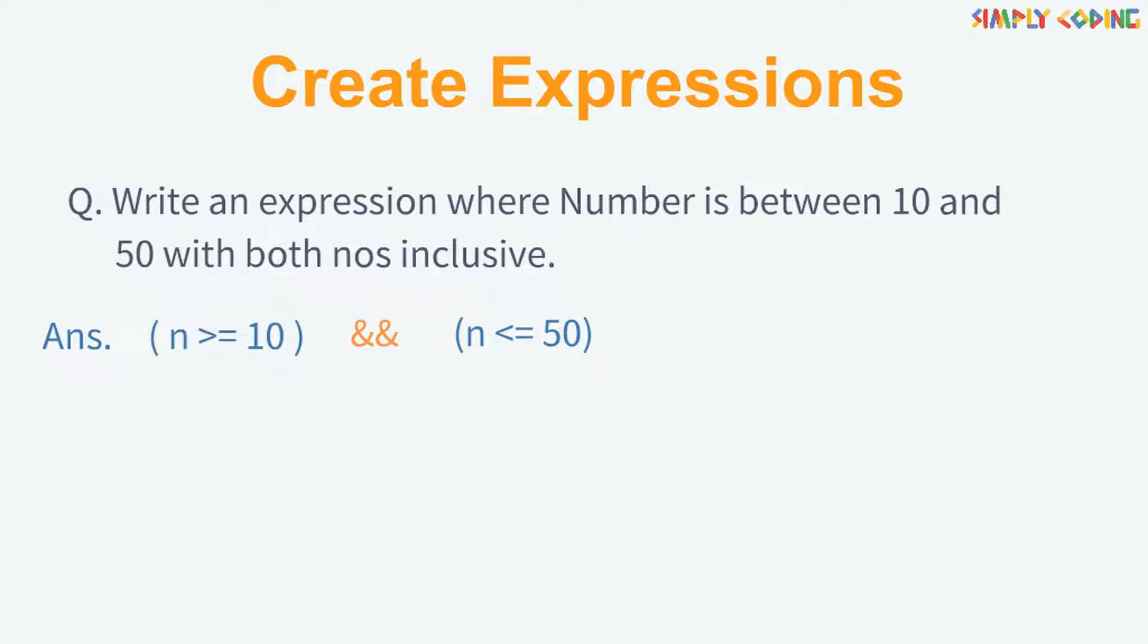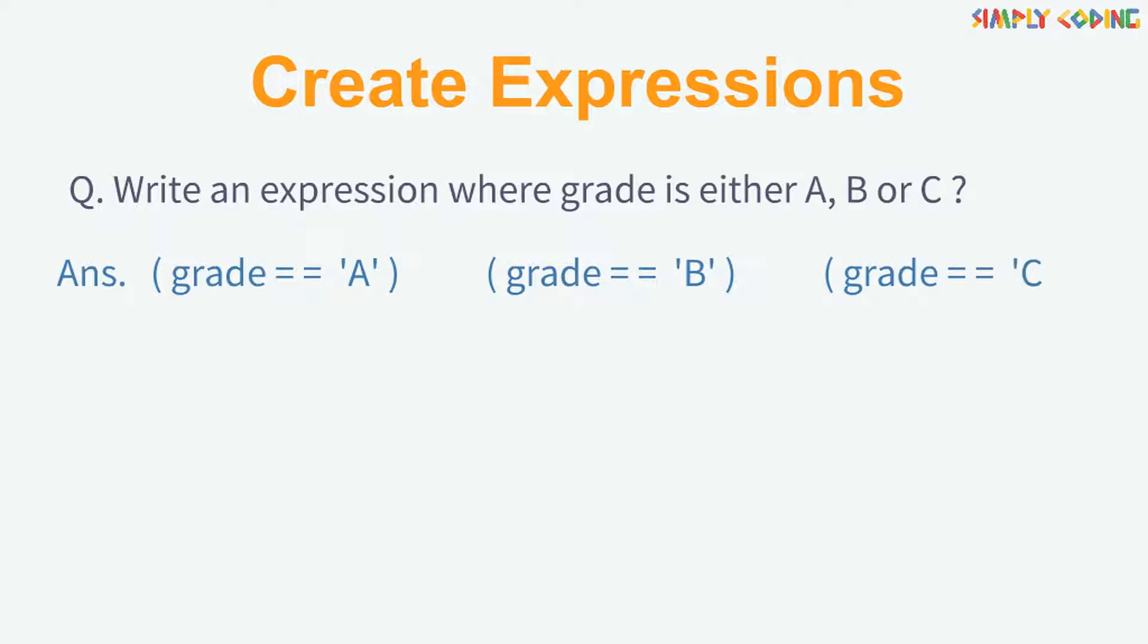This is the final expression. Let's see another example. Write an expression where grade is either a, b or c. Here, we will compare the grade to a, b and c in three separate expressions and then combine it with or. This gives us the final expression.